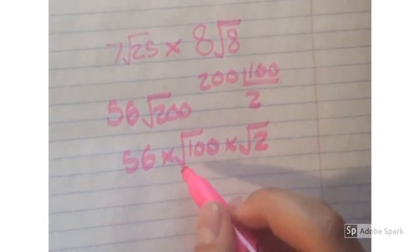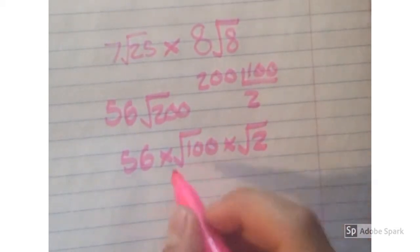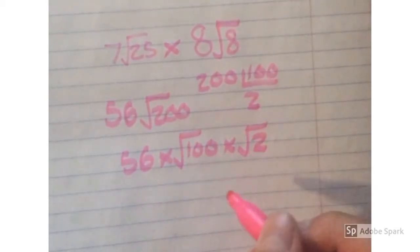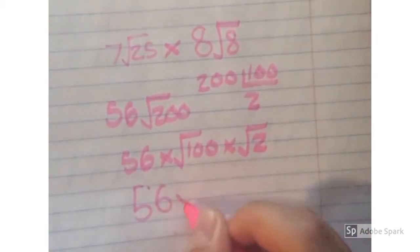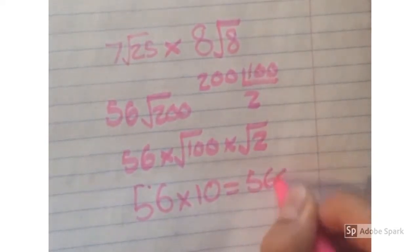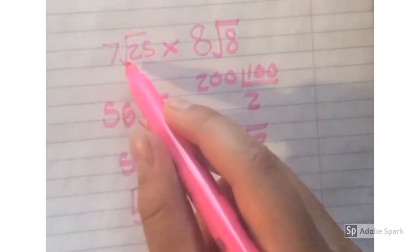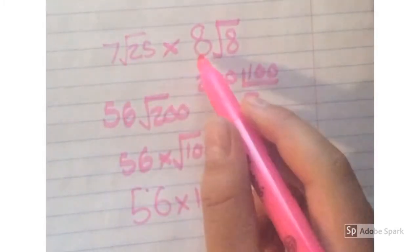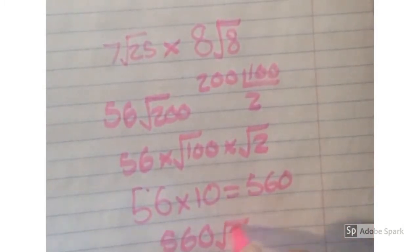So we need to get the radical over the 100 gone. So we'll divide 100 by 10, and that equals 10. So 56 times 10 equals 560. So our answer is 7 radical 25 times 8 radical 8 equals 560 radical 2.